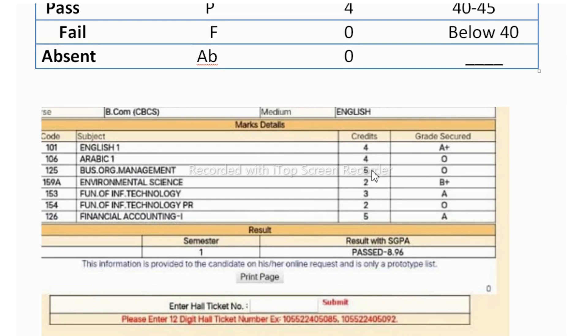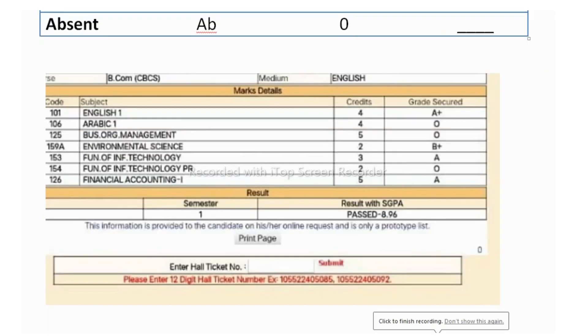What do you mean by these credits? It means that per week, four classes, per week four periods, should be there for this subject. One credit represents one period. One credit means here one period.